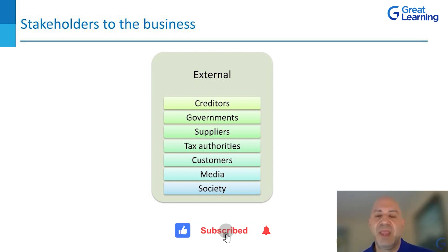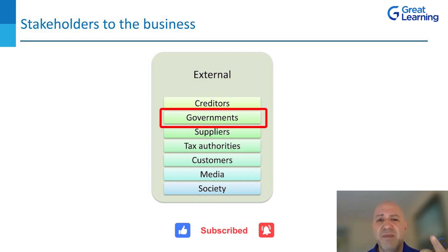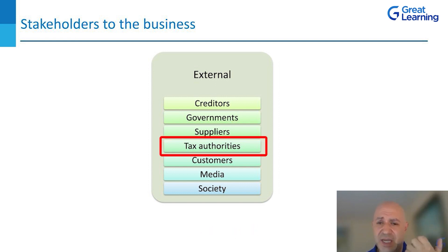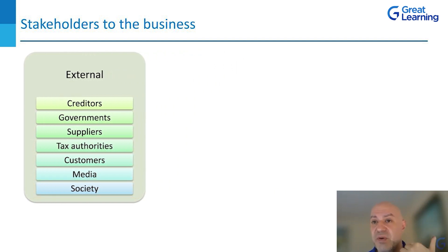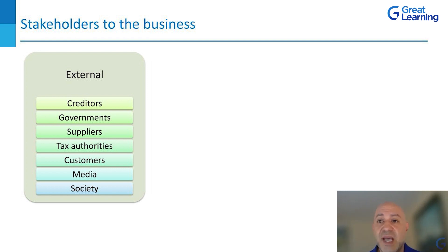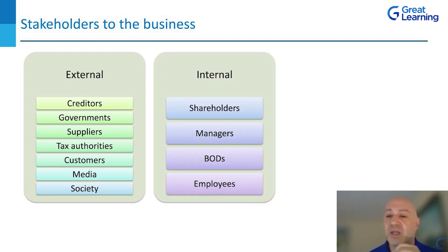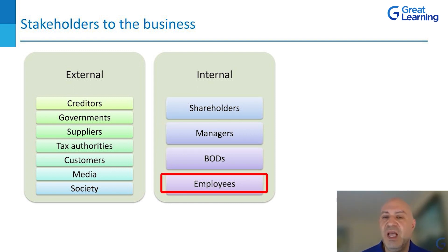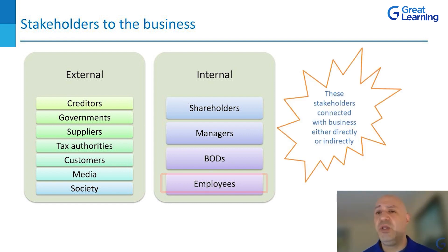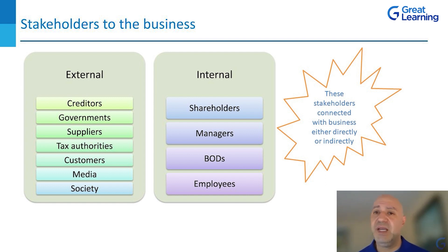Stakeholders to the business: externally, you have creditors, governments, suppliers, tax authorities, customers, media, and society — a lot of different stakeholders you have to appease. Governments require tax payments; suppliers need to be paid to build your product. Internally, you have shareholders, managers, board of directors, and employees. There's a lot riding on what you do from an internal versus external aspect, and you have to meet and accommodate each area.